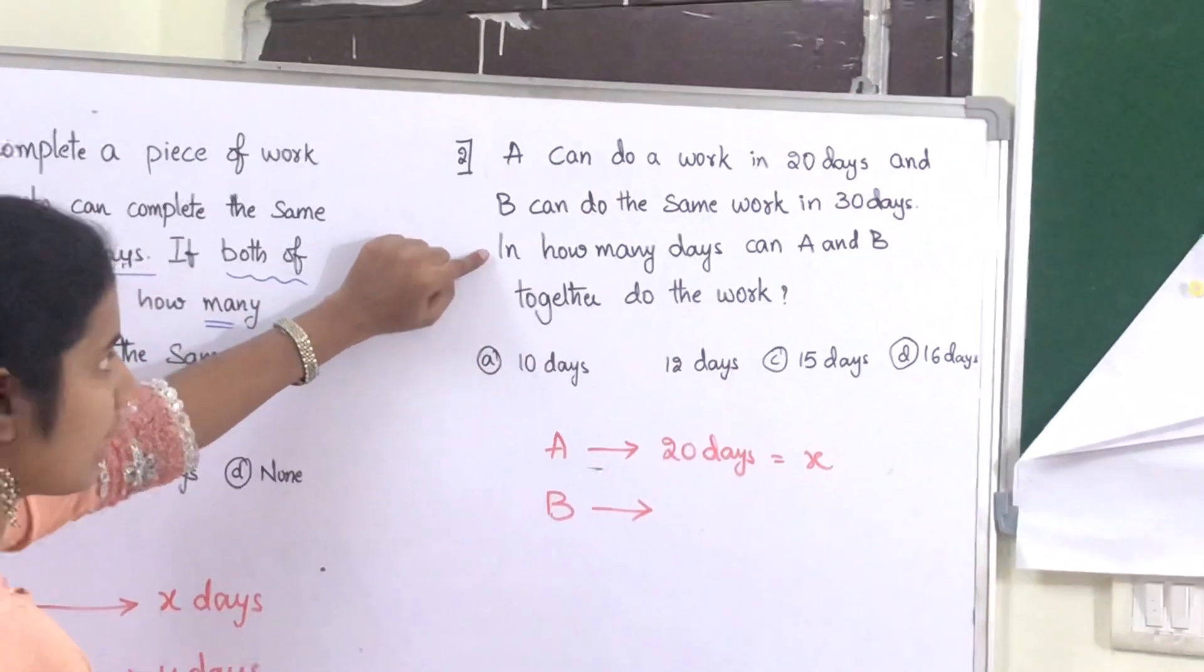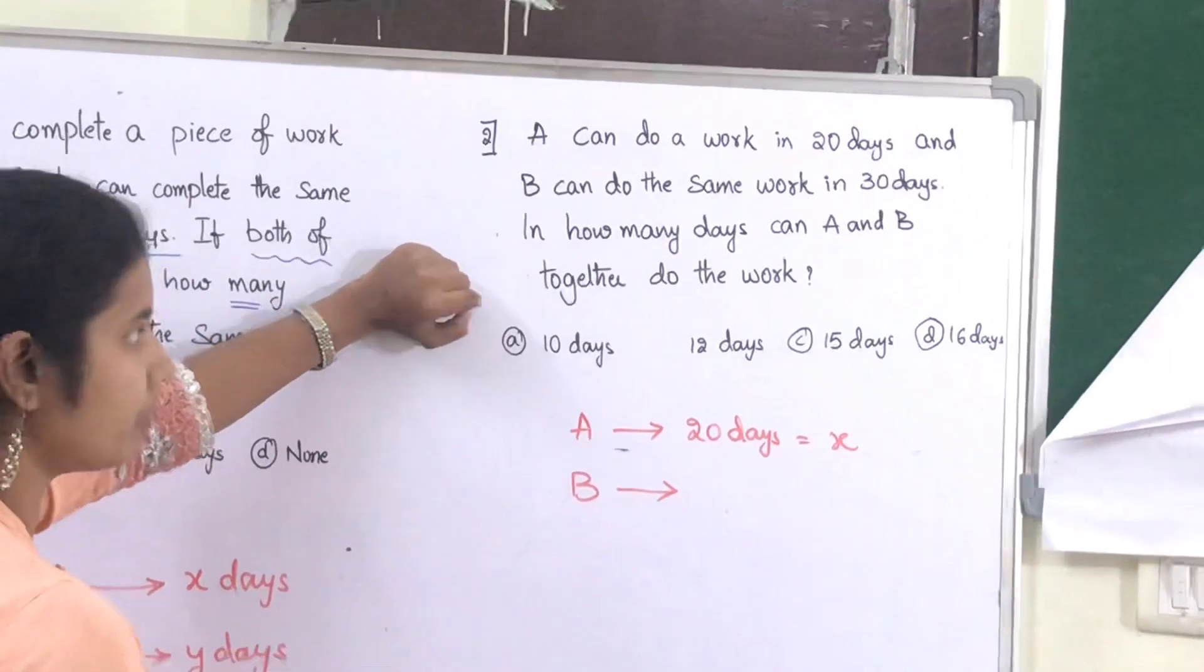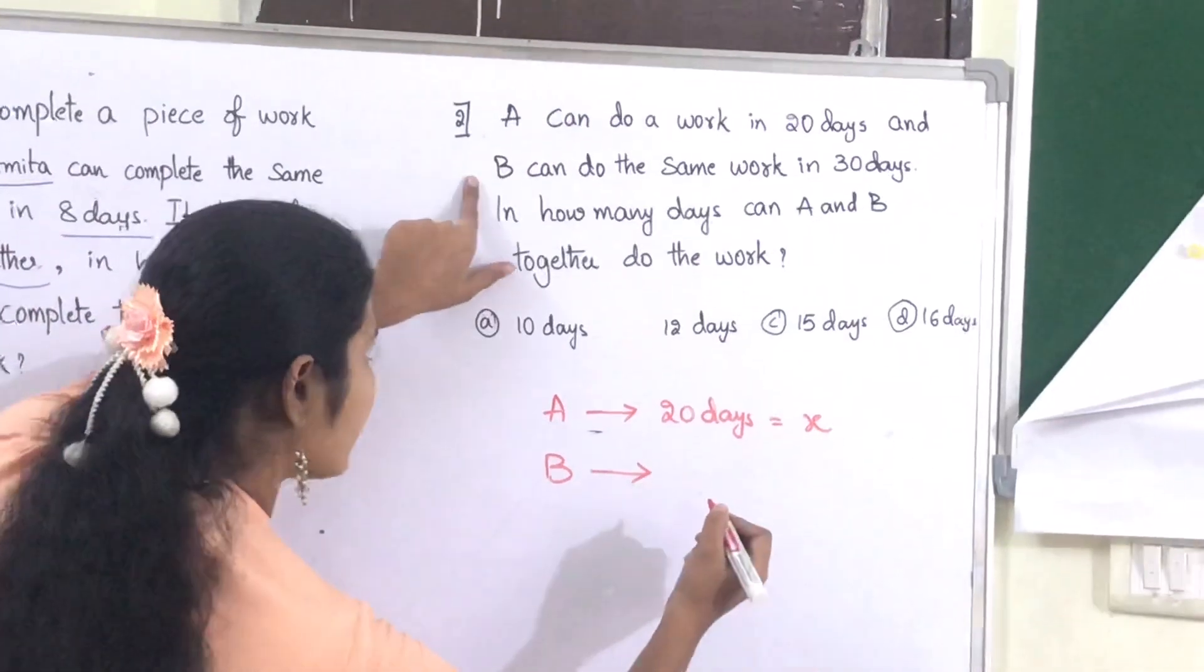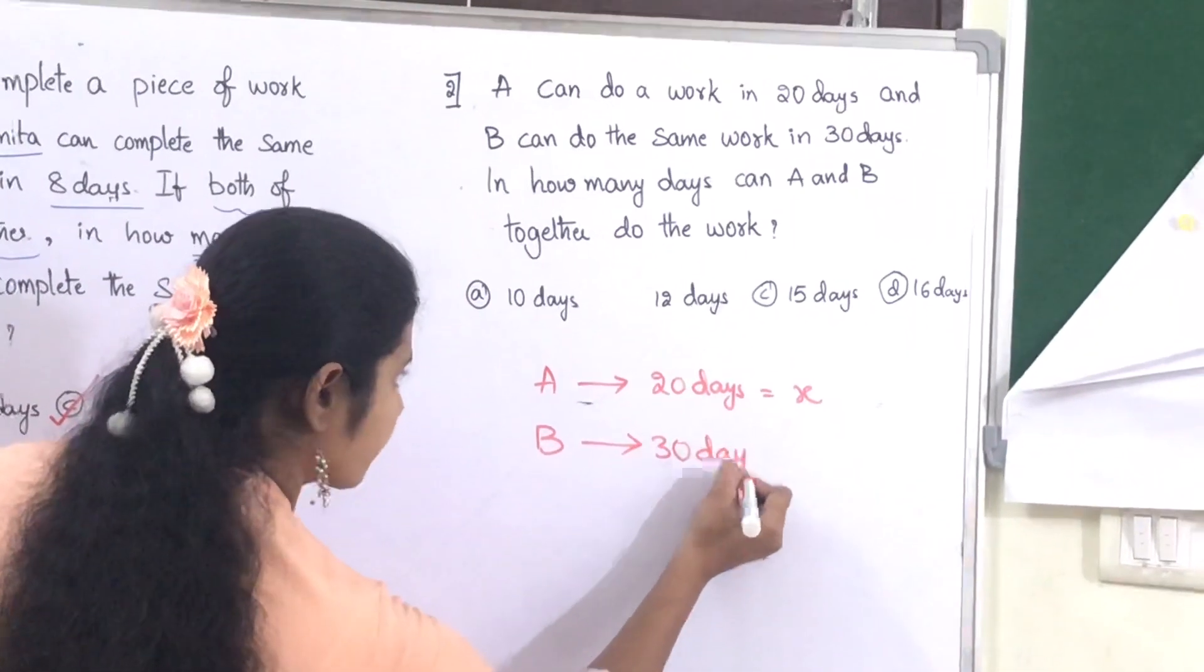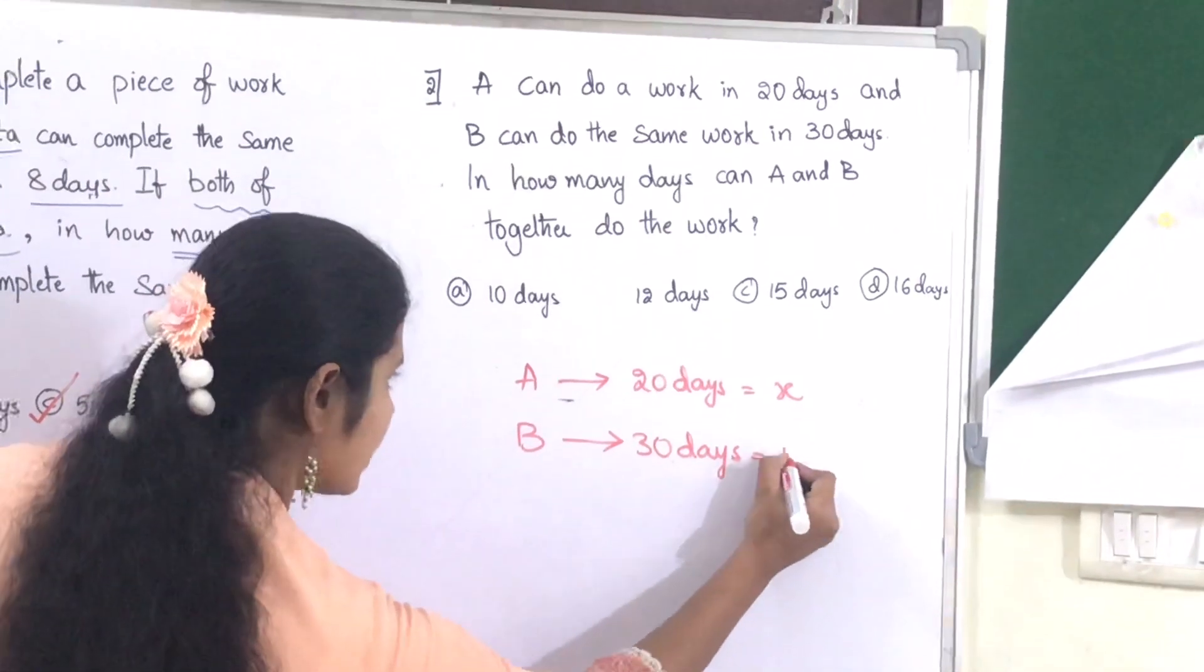And B can do the same work in 30 days. In how many days can A and B together do the work? That means 30 is the value of Y.